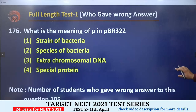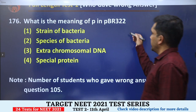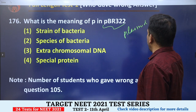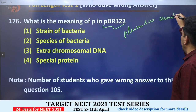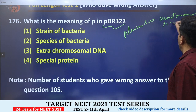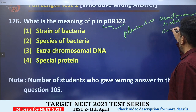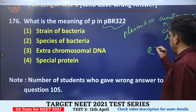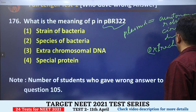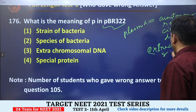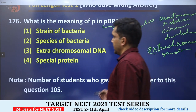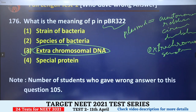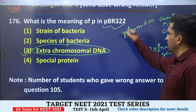Next question: what is the meaning of P in pBR322? This is an artificial bacterial vector. P stands for plasmid. A plasmid is a self-replicating, circular, double-stranded, extra-chromosomal genetic material — meaning it is genetic material present outside the chromosome. So the correct answer is option 3: extra chromosomal DNA. Options like strain of bacteria, species of bacteria, and special protein are all incorrect.